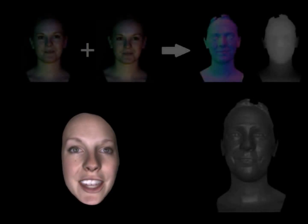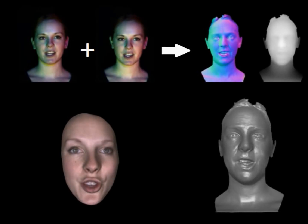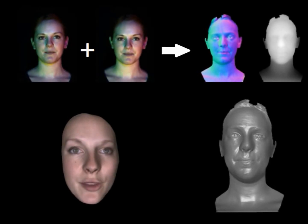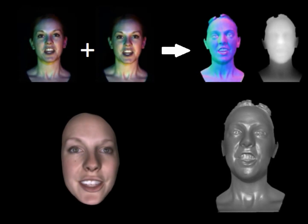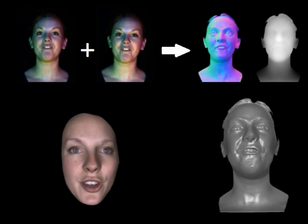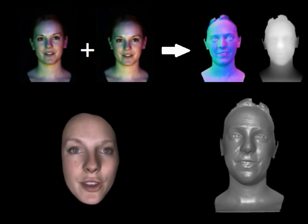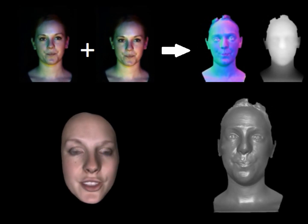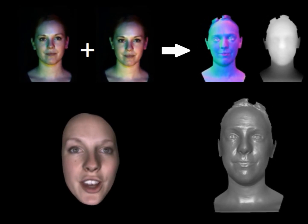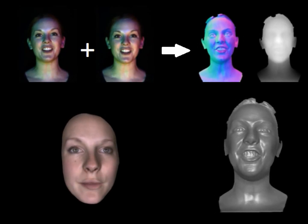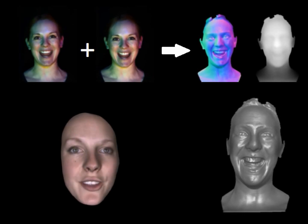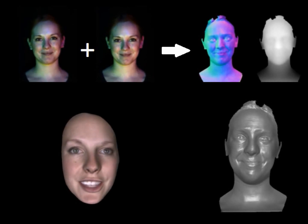To record 3D data a combination of multi-view stereo and color photometric stereo was used. This produces high-resolution geometry but requires a lot more effort to capture than simple video. For this reason a much smaller sample was collected, only 25 sentences.